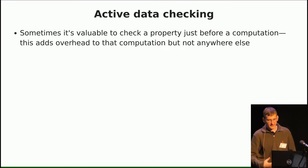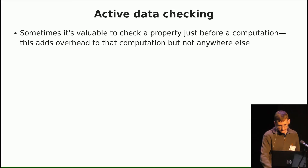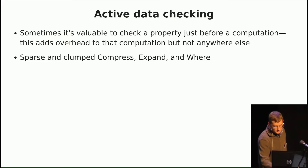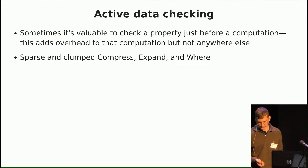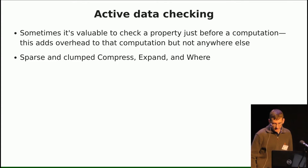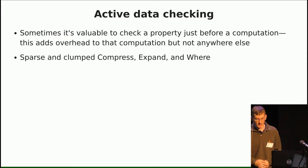The other category is 'active' — the actual checking of the data is done right before we use it. One example is the 'where' code I explained: we're free to check data here because the left argument is Boolean and the right argument probably isn't. The sum to figure out how many elements are in the result is a very small portion of the computation, so we can check data properties very cheaply.